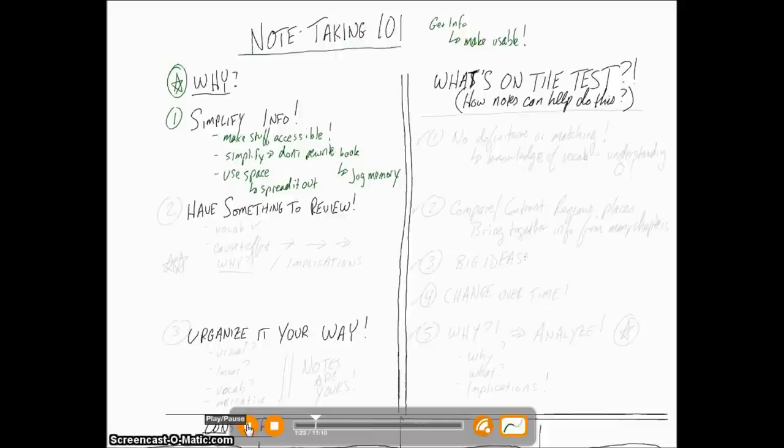The second thing that you want to do is make sure that you have something to review. By that, you want to make sure that you understand vocabulary. Maybe things that you forget about, you want to make sure that you know what they mean.